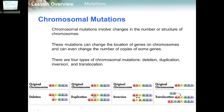Let's move to the second type: chromosomal mutation. Chromosomal mutation involves changes in the number or structure of chromosomes. This mutation can change the location of genes on a chromosome and can even change the number of copies of some genes. There are four types: deletion, duplication, inversion, and translocation.